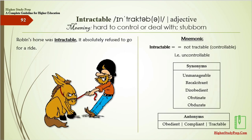Intractable means hard to control or deal with, or stubborn. Mnemonic: intractable — not tractable, not controllable, that is, uncontrollable. The synonyms are unmanageable, recalcitrant, disobedient, obstinate, or obdurate, and the antonyms are obedient, compliant, or tractable. Example: Robin's horse was intractable — it absolutely refused to go for a ride.